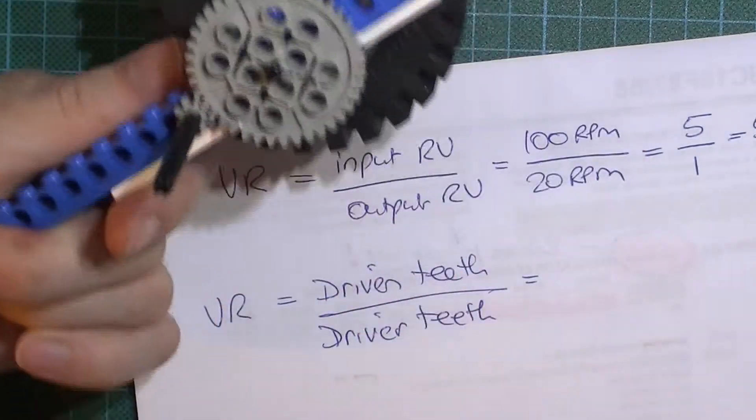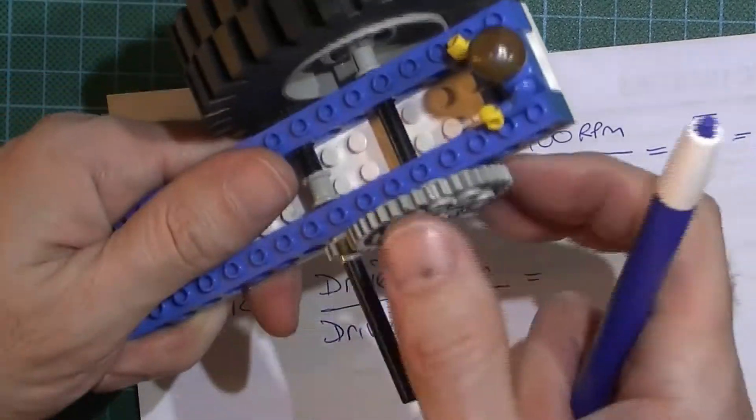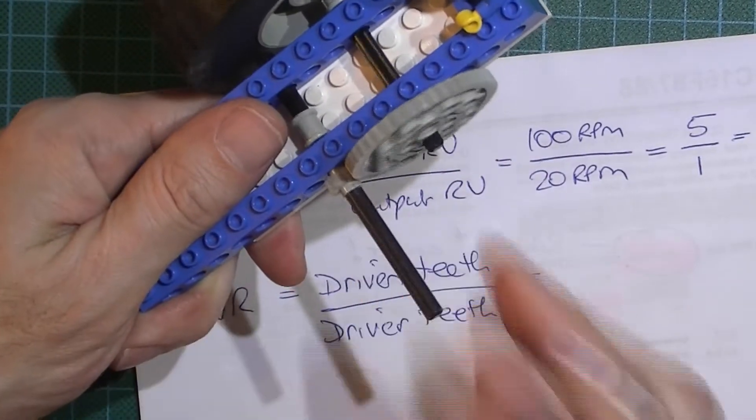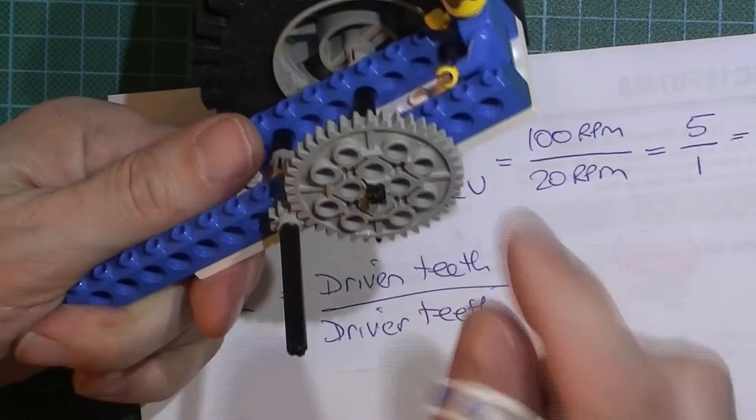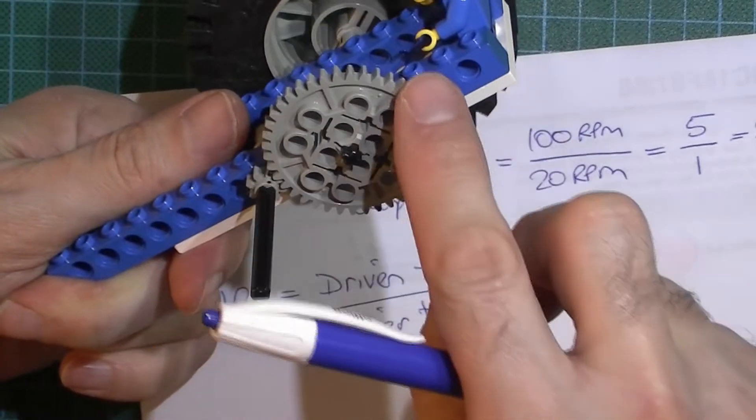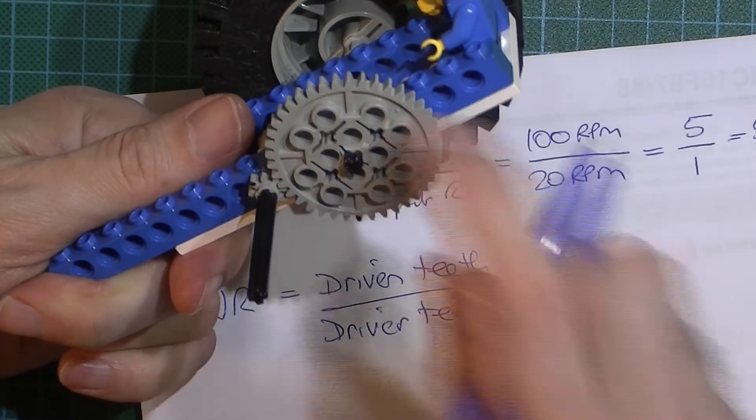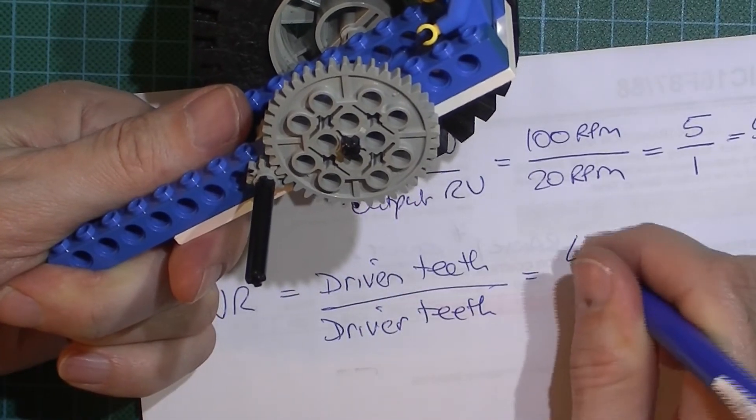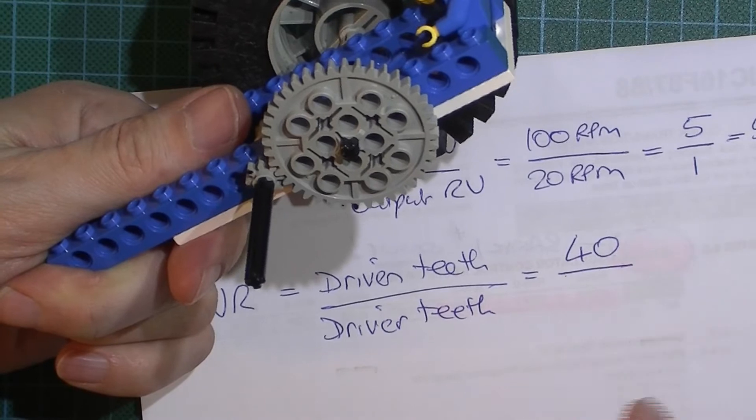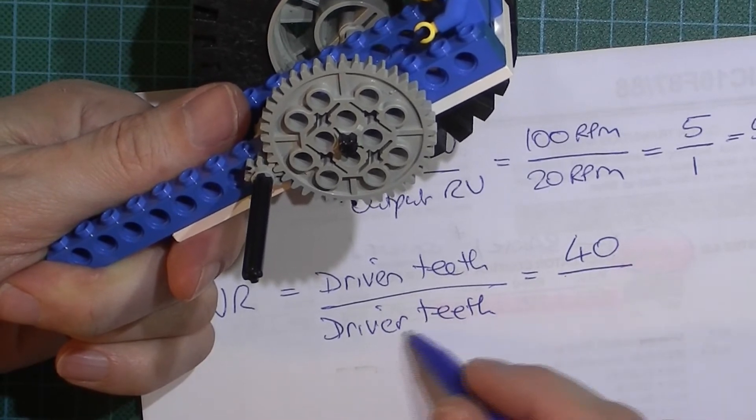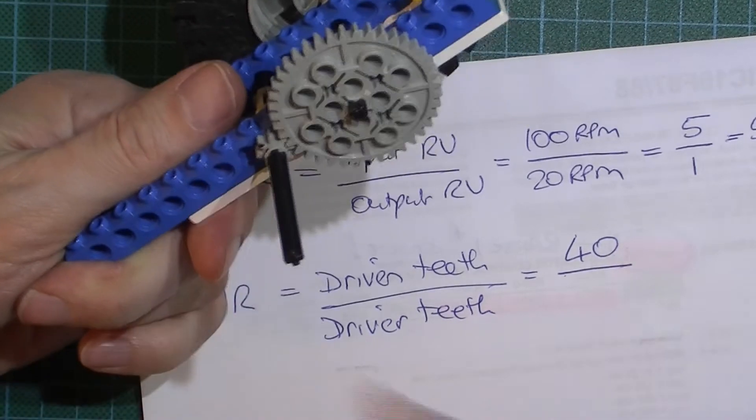So if I were to calculate the driven teeth—remember this is the driver, this is where the motor is connected—if I were to count the number of teeth here, which I've already done, it's 40 teeth, and then put that over the number of teeth on the driver, this one, which is 8.